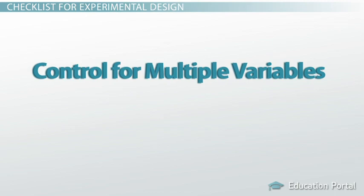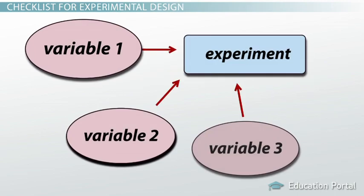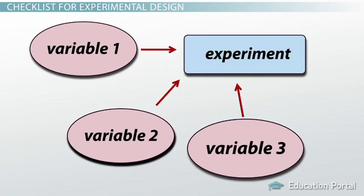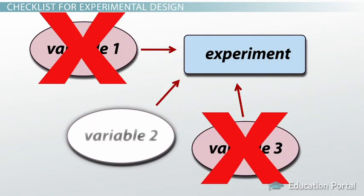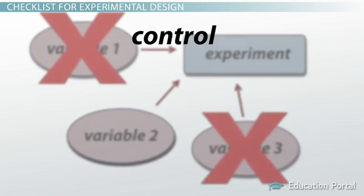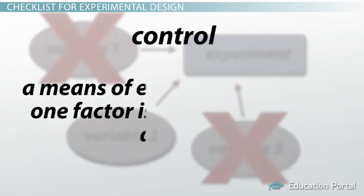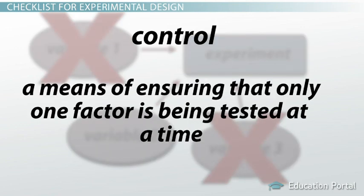Finally, experiments have to control for multiple variables. That is, if more than one variable is affecting the experiment, then only one variable should be affecting it at a time. Scientists make sure this happens by incorporating a control into the experiment. A control is a means of ensuring that only one factor is being tested at a time.